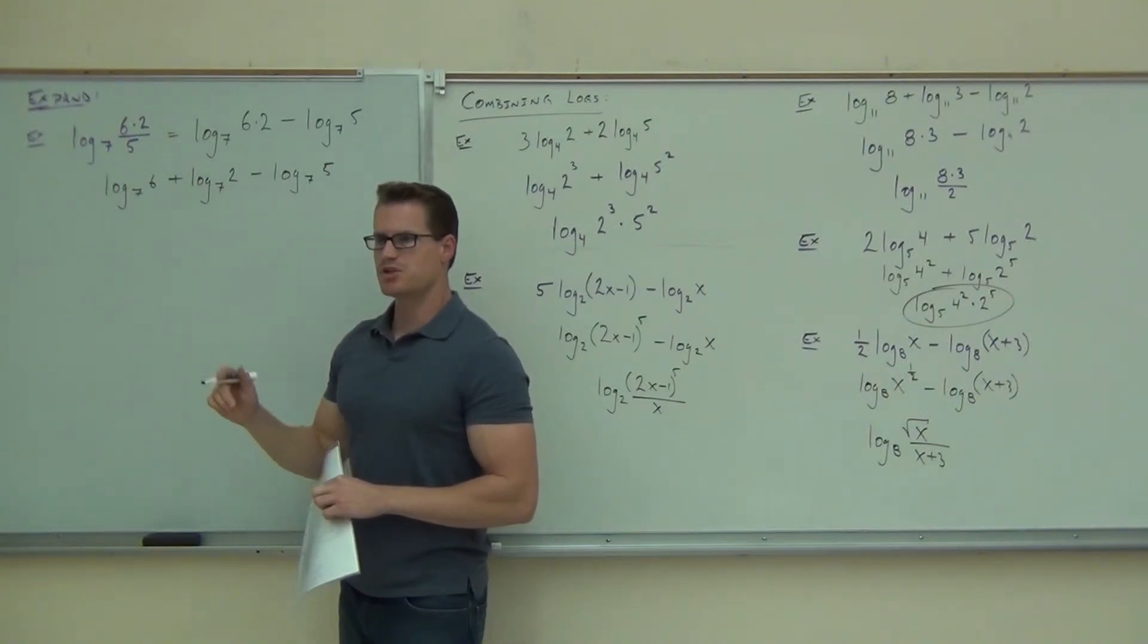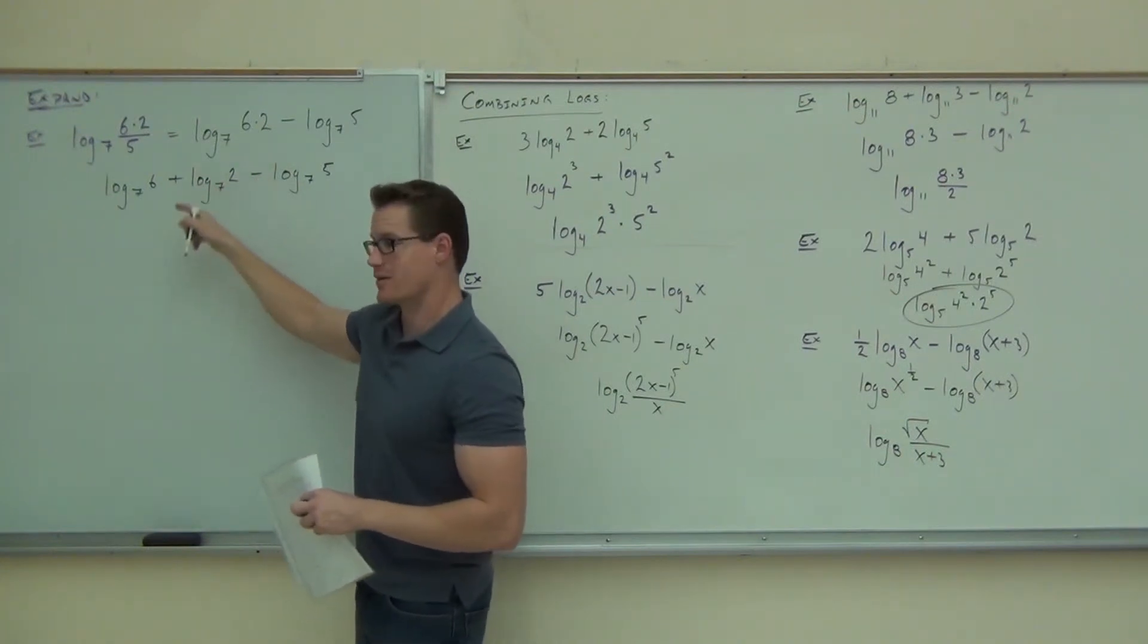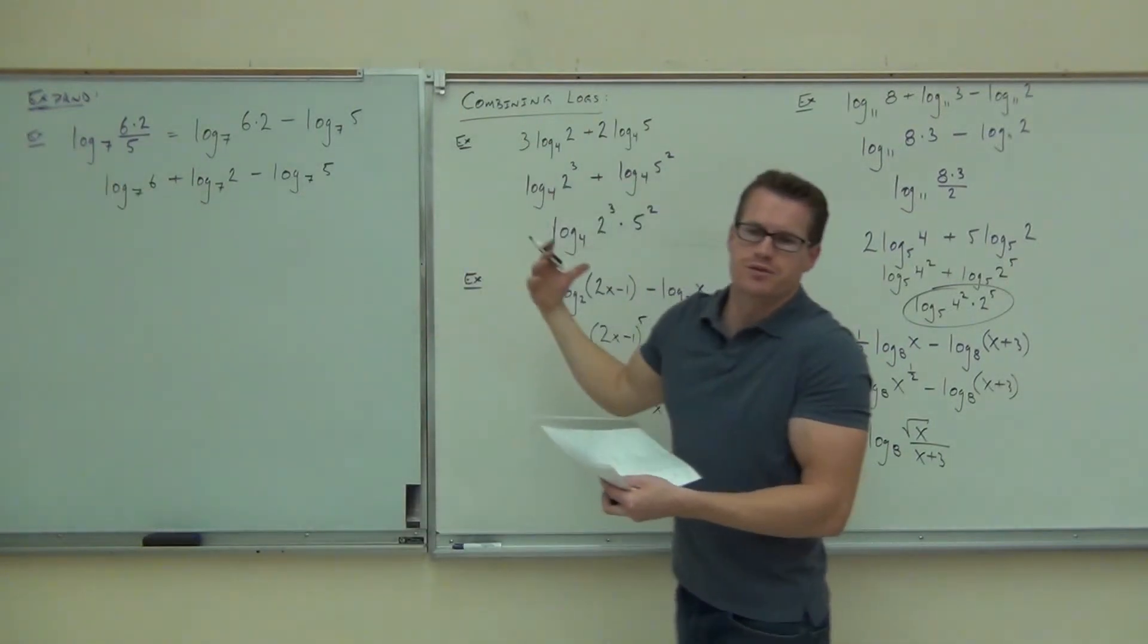Now, at this point, you'd be checking for any exponents you can move forward. Notice that you don't move exponents forward until you get down to this step. Expand all your product rule, your quotient rule, and then your exponents. You're going backwards of combining.